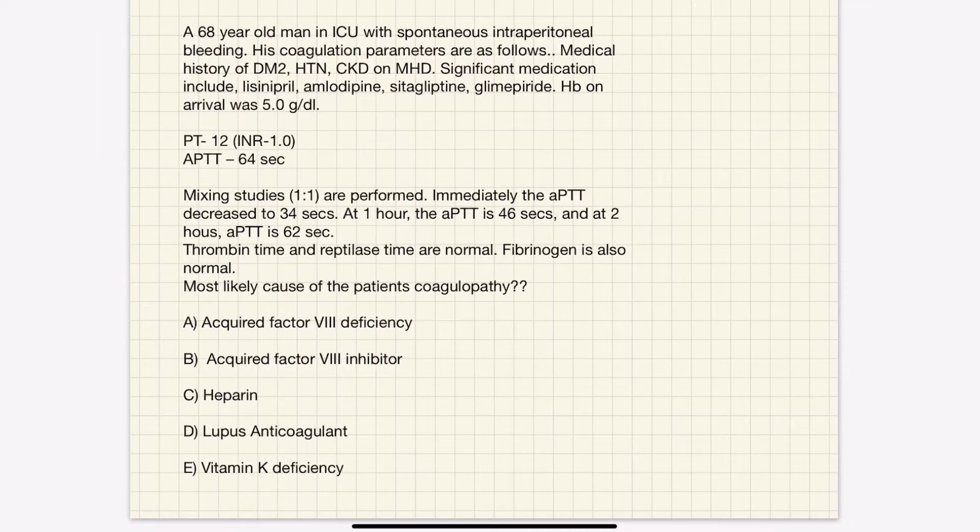Let us discuss a case on coagulation disorder. We have a patient who came to ICU with spontaneous intraperitoneal bleeding. His coagulation parameters are as follows: prothrombin time 10-12, aPTT 64 seconds. We have done mixing studies one-to-one.